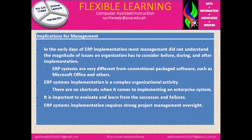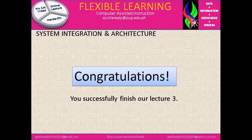Now, the implications for management. In the early days of ERP implementation, most management did not understand the magnitude of issues an organization has to consider before, during, and after implementation. ERP systems are very different from conventional package software such as Microsoft Office. ERP system implementation is a complex organizational activity — therefore, there are no shortcuts when it comes to implementing an enterprise system. It is important to evaluate and learn from successes and failures. ERP system implementation requires strong project management oversight. That's all for today. Thank you for watching and good luck. Congratulations on successfully finishing lecture number three.